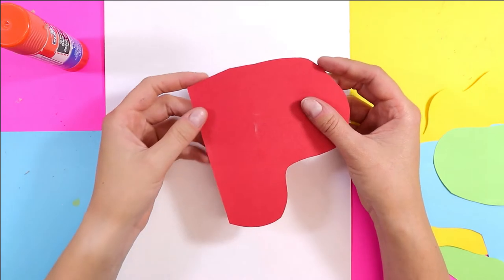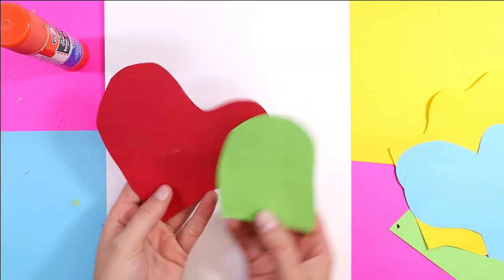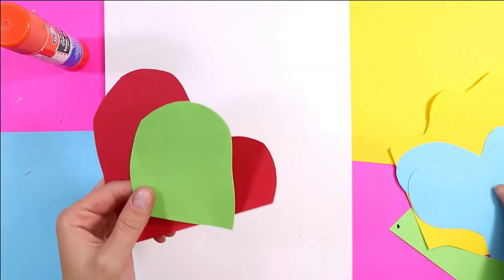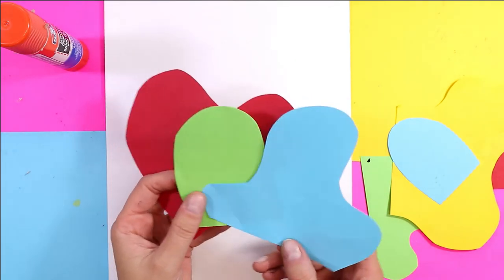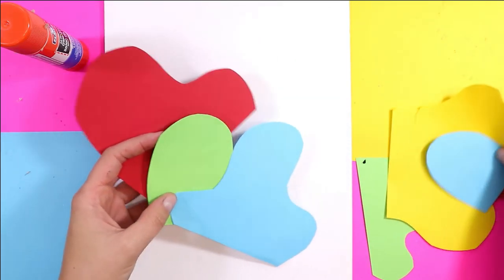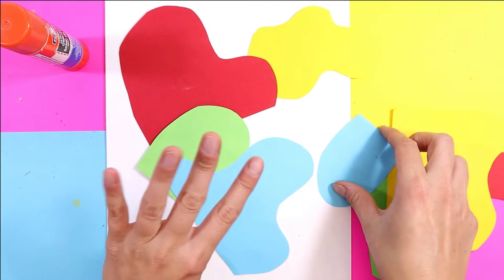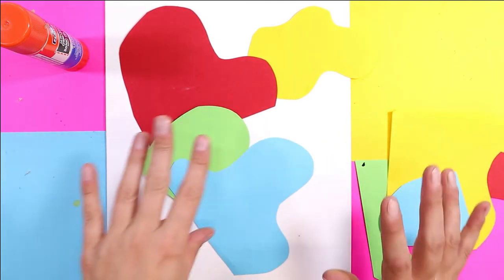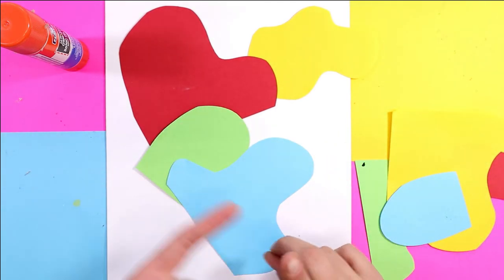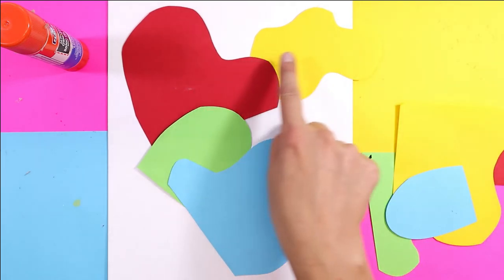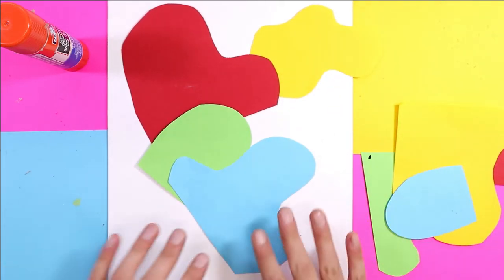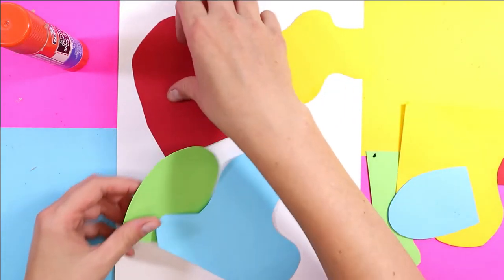We're going to begin this artwork by finding some colored paper that is sort of rainbow-themed colors. You can pick whatever you want. For mine I just picked four of my rainbow colors. The rainbow colors are red, orange, yellow, green, blue, indigo, and violet. I've picked red, yellow, green, and blue and then cut out some organic shapes.